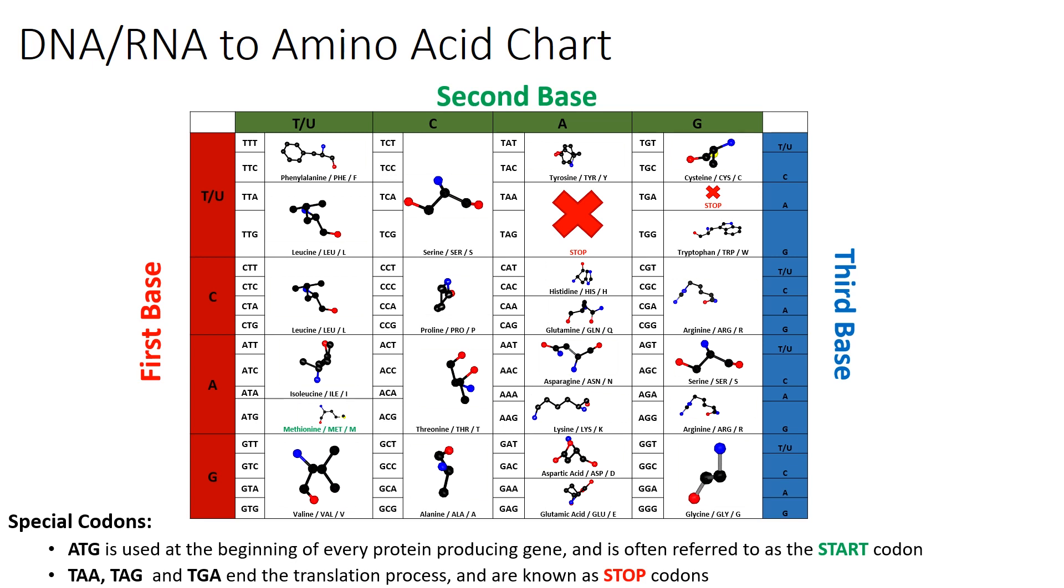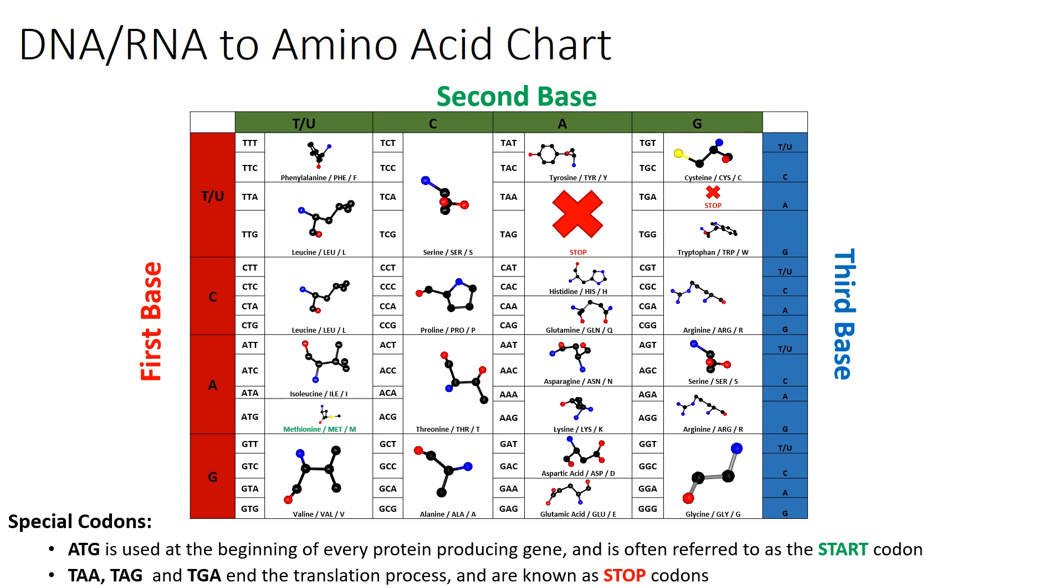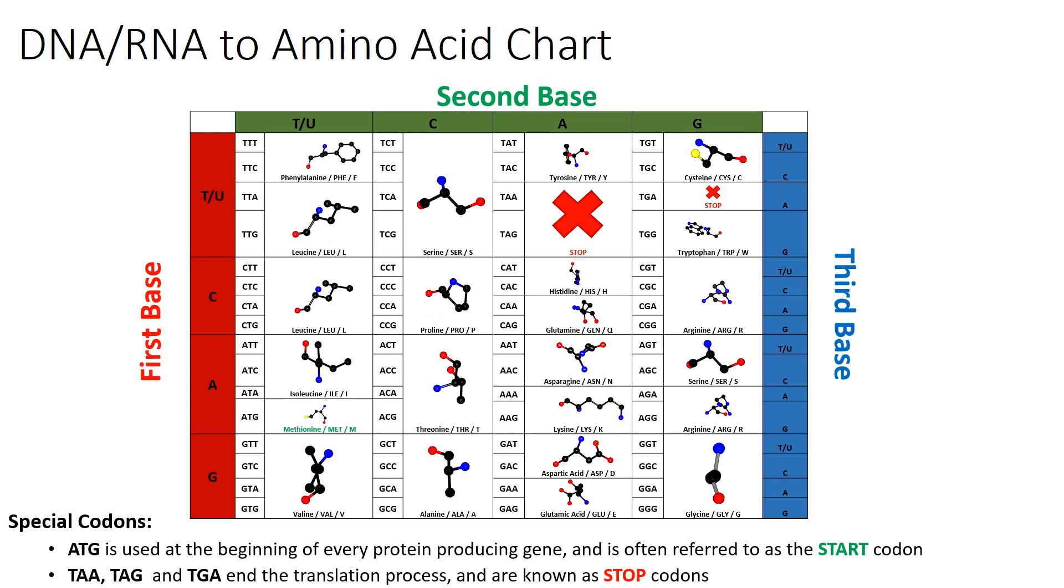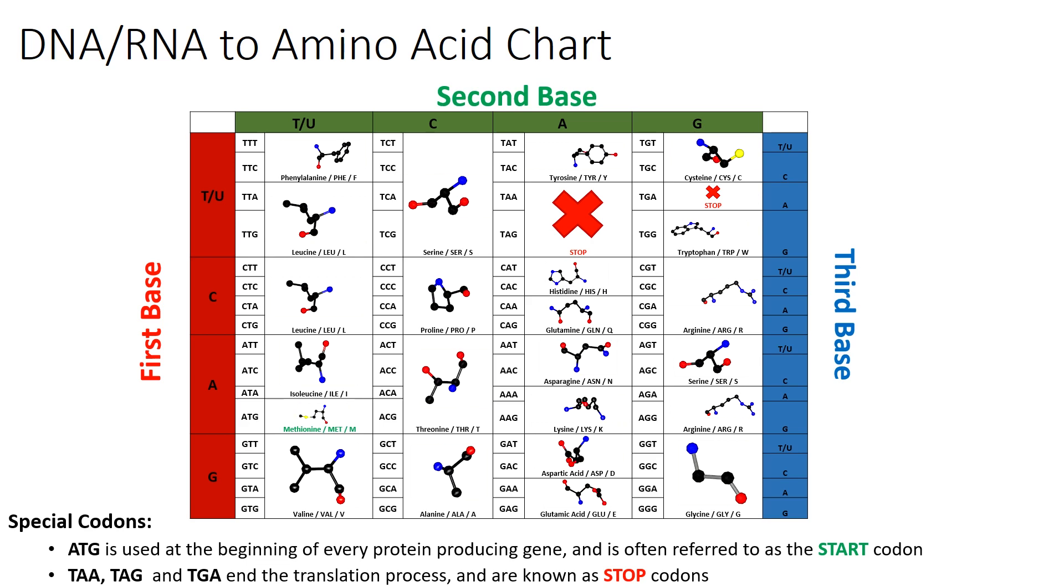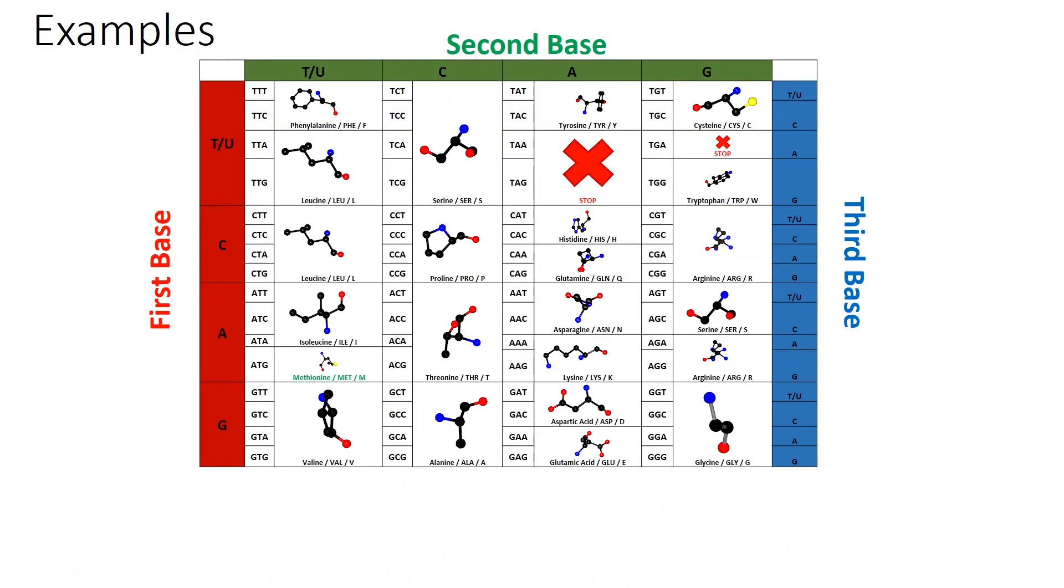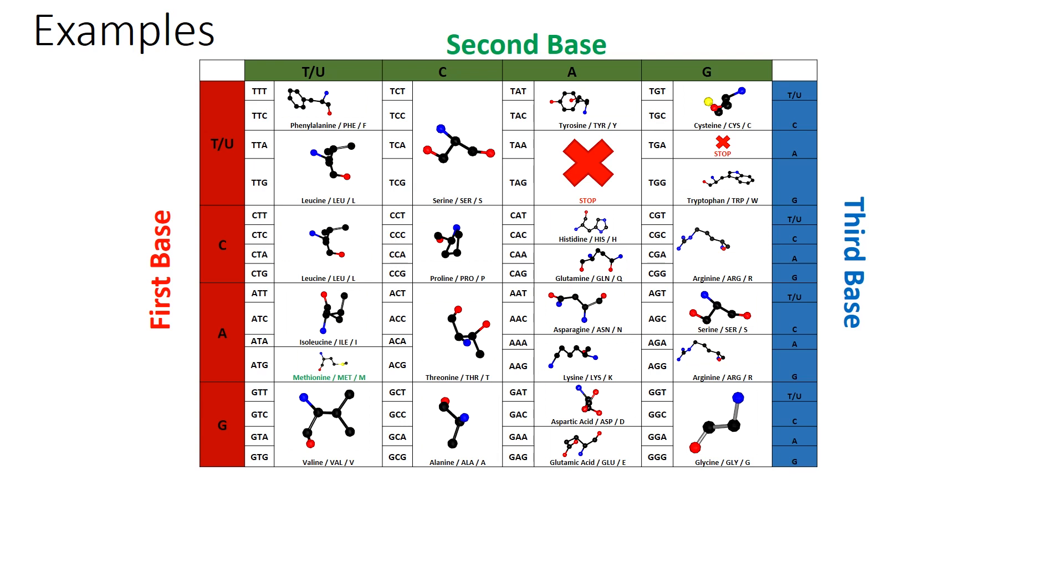Unlike the start codon, these codons do not code for an amino acid, and instead is a complete hard stop to the translation process. To show how this works, let's go through a few example codons.